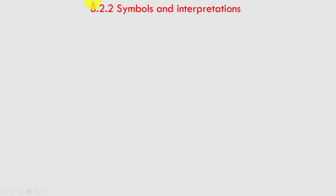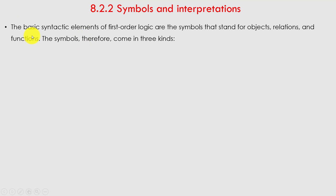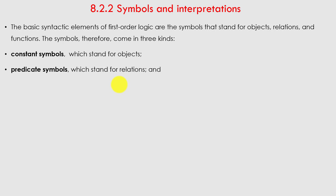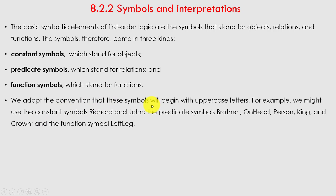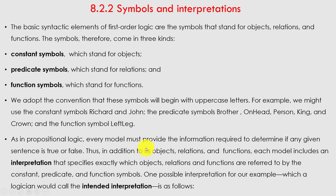Next point: symbols and interpretation. The basic syntactic elements of first-order logic are symbols that stand for objects, relations, and functions. Symbols come in three kinds: constant symbols, which stand for objects; predicate symbols, which stand for relations; and function symbols, which stand for functions. By convention these symbols begin with uppercase letters — for example, constant symbols Richard and John; predicate symbols Brother, OnHead, Person, King, Crown; and function symbol LeftLeg.